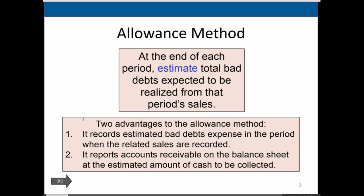Basically, think about it this way: if it's the end of a fiscal year, say December 31st, we need to make our financial statements and we need to determine how much of the receivables at that point in time we believe will be uncollectible.